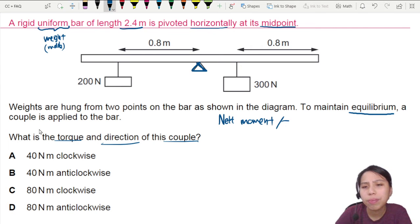So net moment is what we need to find first. Net moment or net torque? I personally like to say torque because it sounds cool. Look at the torque. But moment is also fine.